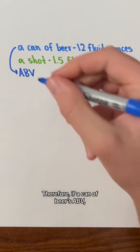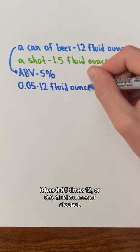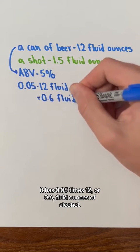Therefore, if a can of beer's ABV or alcohol by volume is 5%, it has 0.05 times 12 or 0.6 fluid ounces of alcohol.